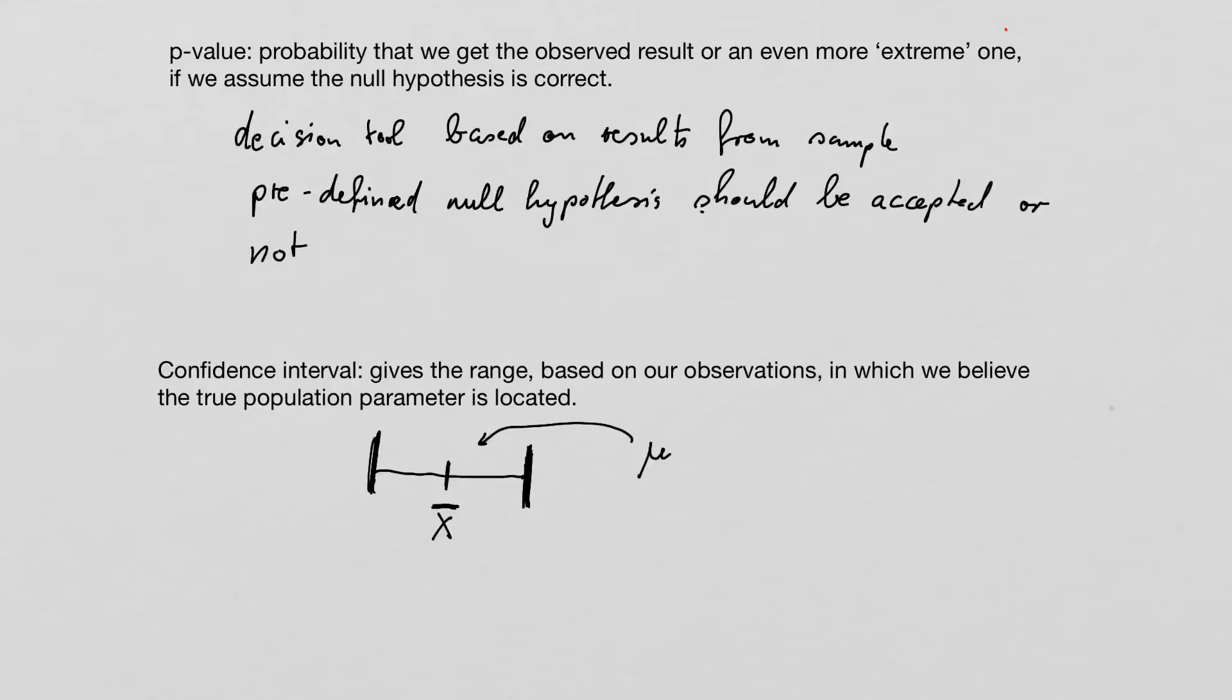So if in doubt, I would suggest always publish or show both your confidence interval and the p-value. As I said, they show very different things.